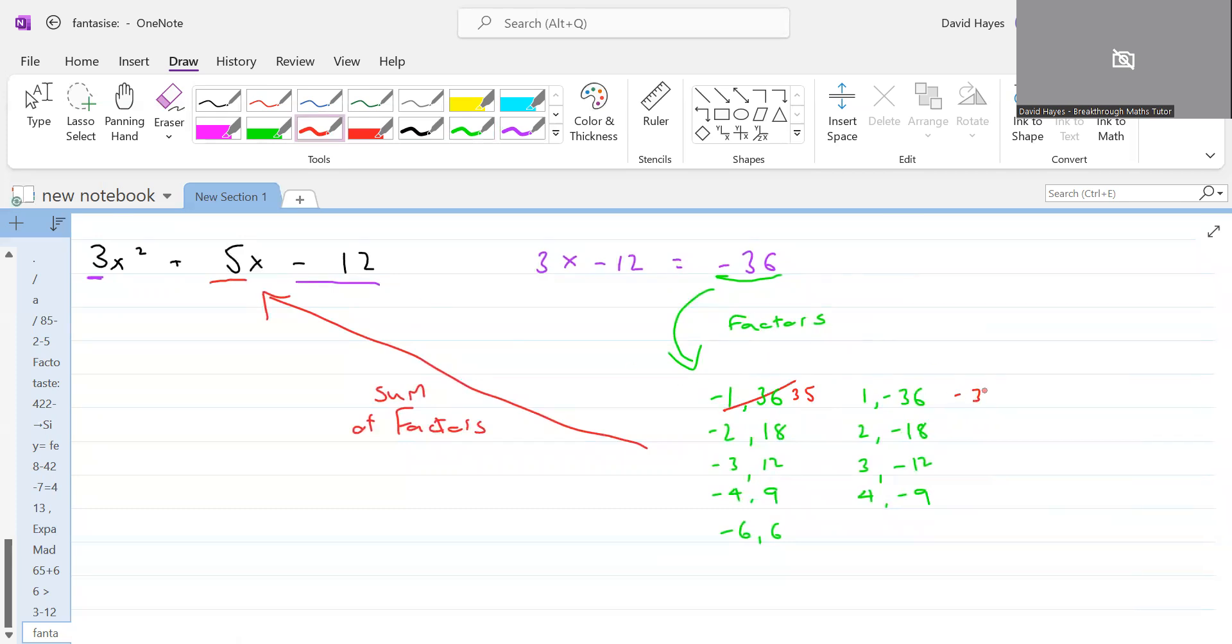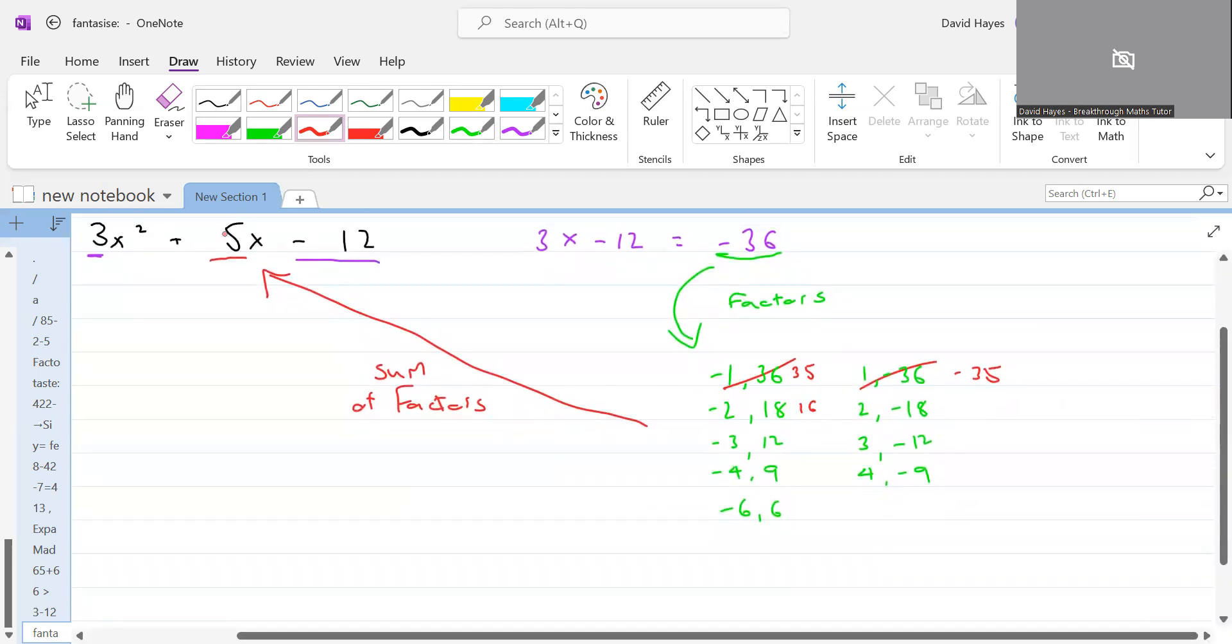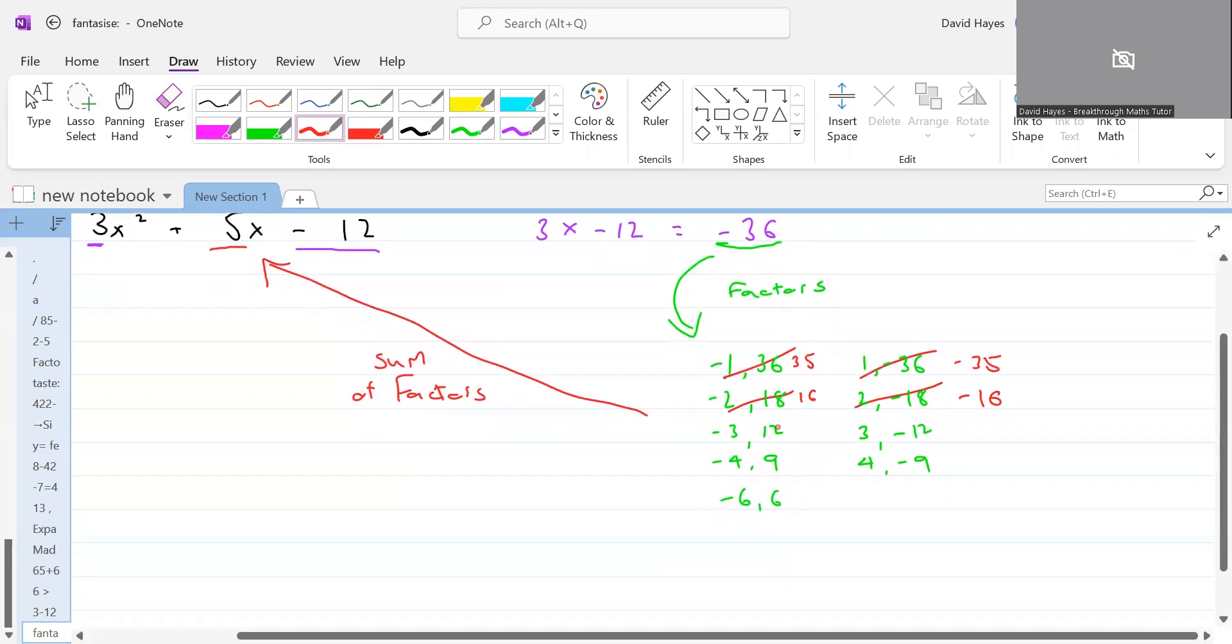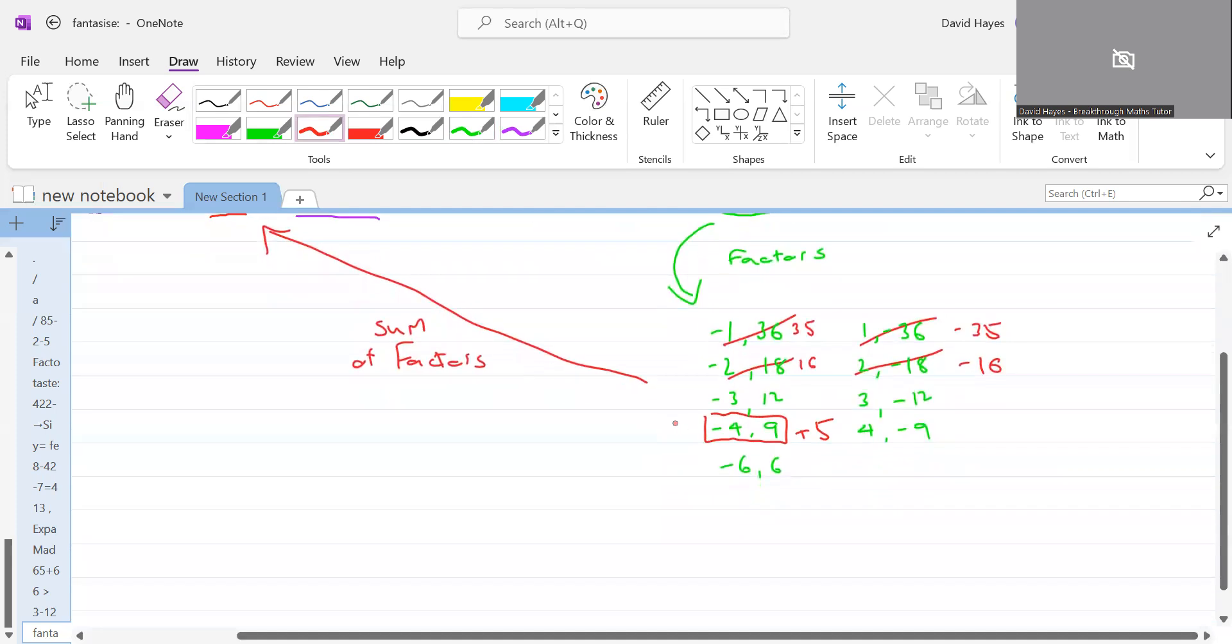1 and minus 36 would give me minus 35, that's not an option. Minus 2 and 18 would give me 16, not plus 5, not an option. 2 and minus 18 would give me minus 16, not an option. So I can keep doing that for all of them. And if I look through them all, the one that stands out to me is minus 4 and plus 9 will give me the plus 5. So that is my set of factors that I'm going to pick.